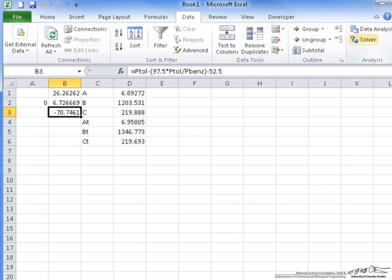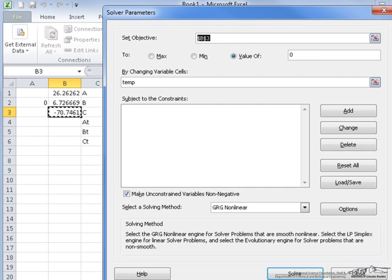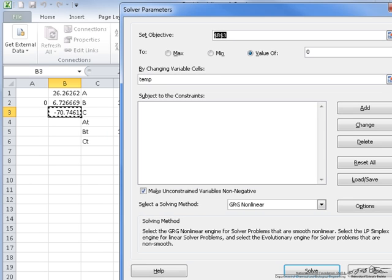And so what we are going to do here is use solver. And so if you look here at solver, what we are going to do is we are going to set this equation equal to 0, because that is how we set it up by changing our cell right here. And when we solve for that temperature,